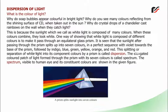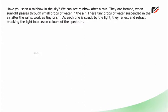Have you seen a rainbow in the sky? We can see rainbows after rain. They are formed when sunlight passes through small drops of water in the air. These tiny drops of water suspended in the air after the rains work as tiny prisms. As each one is struck by the light, they reflect and refract, breaking the light into seven colors of the spectrum.